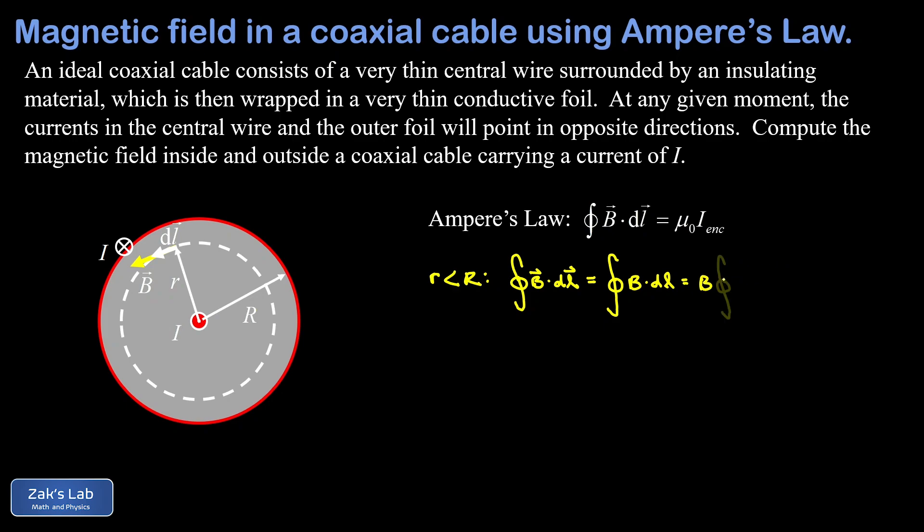Now we have B times the path integral of dl over this closed circle of radius r. If we add up all the dl along this circle, we just get the circumference of it, so we end up with B times 2πr.